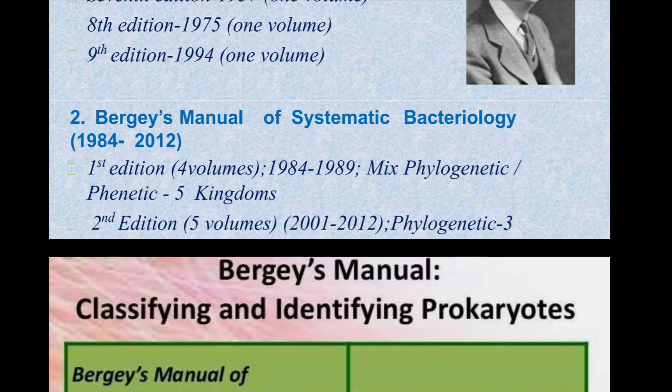Bergey's Manual of Systematic Bacteriology consists of two editions. The first edition has four volumes, published between 1984 and 1989, using a mixed phylogenetic and phenetic five-kingdom system. The second edition has five volumes, published between 2001 and 2012, and consists of phylogenetic information.